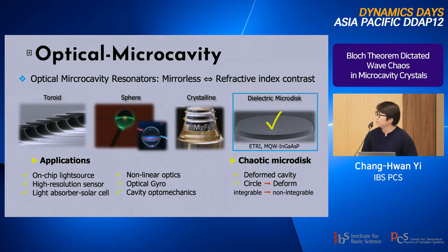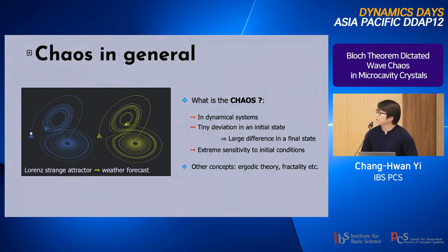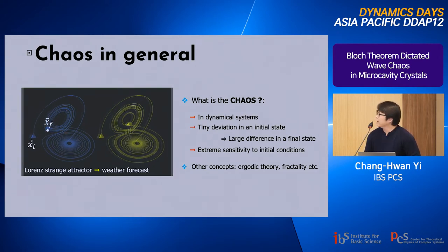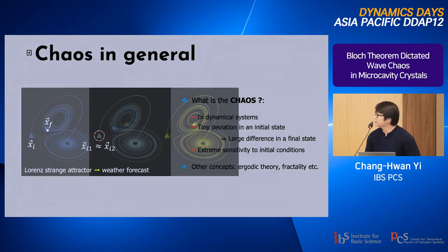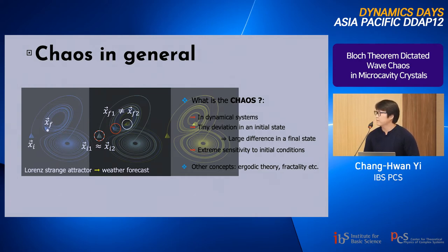The second question: what is chaos? Given a dynamical system, if the system is chaotic, tiny deviations in the initial state can result in large differences in the final state. This is referred to as extreme sensitivity to initial conditions. There are many other important concepts in chaos theory, for example ergodic theory and self-similarity, which is the concept of fractality.